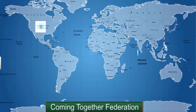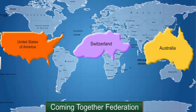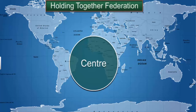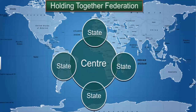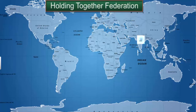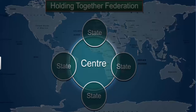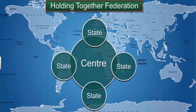USA, Switzerland, and Australia are examples of Coming Together Federations. In these countries, all constituent states usually have equal power and are strong vis-à-vis the federal government. In Holding Together Federations, a large country decides to divide its power between constituent states and the national government. India, Spain, and Belgium are examples. In this type, the central government tends to be more powerful, and constituent units may have unequal powers.